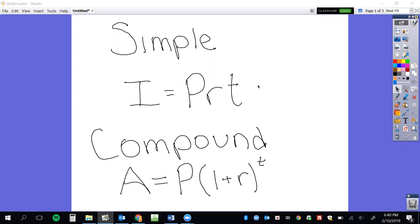It is I equals PRT. I stands for interest, P stands for principal, and a principal is my starting dollar amount. R is my rate. Usually in a problem, it is given to me as a percent.